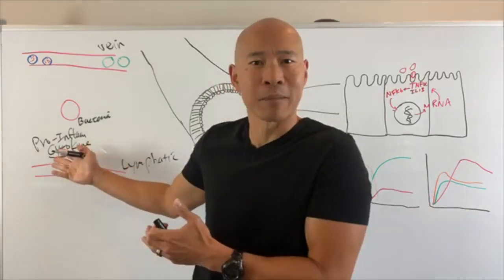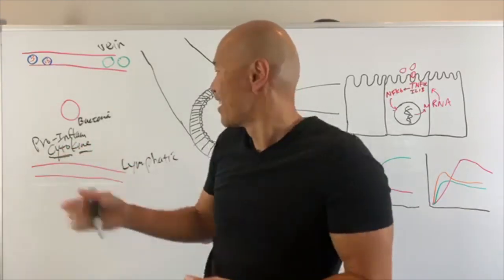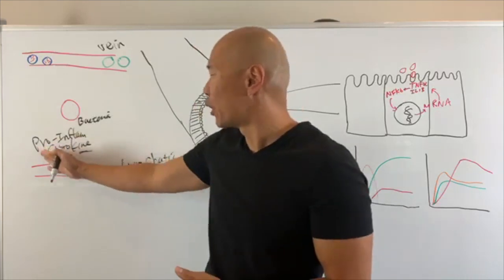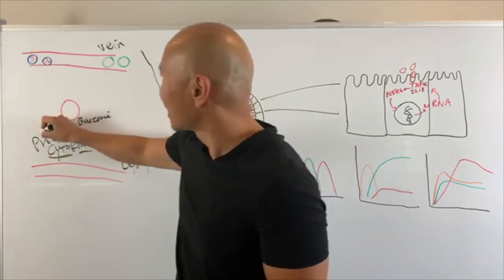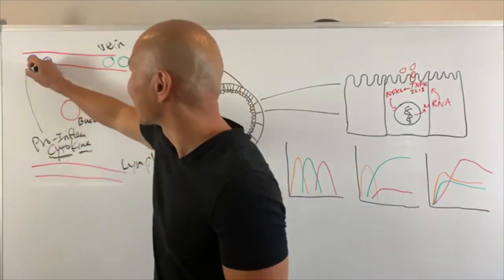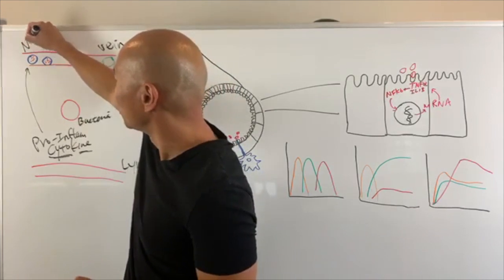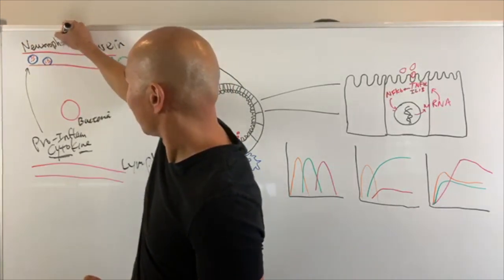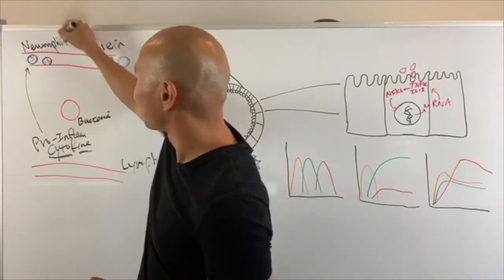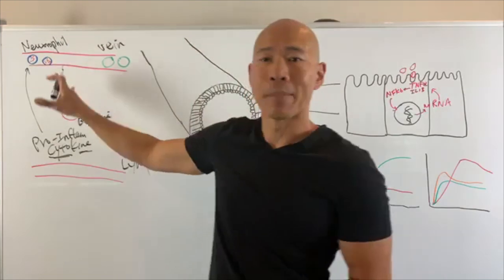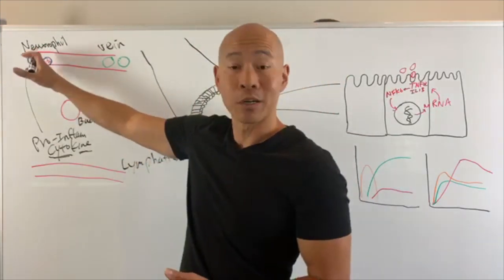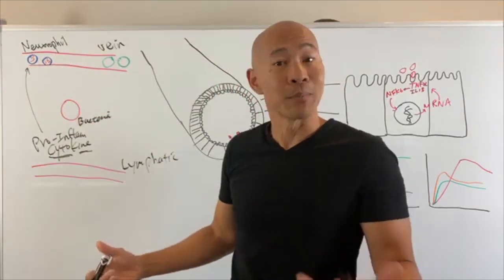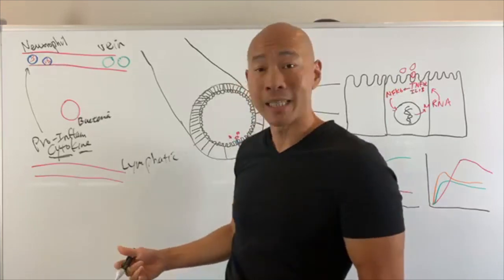So they send these pro-inflammatory cytokines to signal these guys. Now, these cells right here are called neutrophils — they're a specific type of white blood cell. And this marker, by the way, can be tested through a standard complete blood count, CBC panel on blood tests.